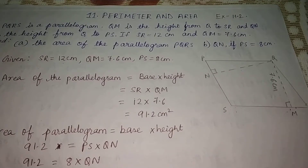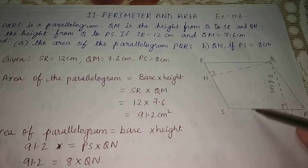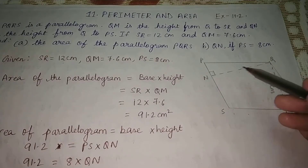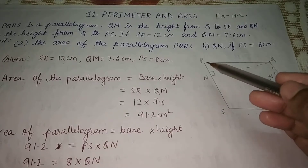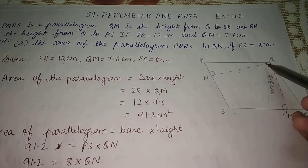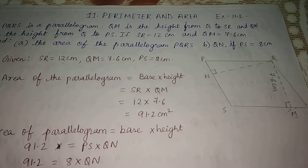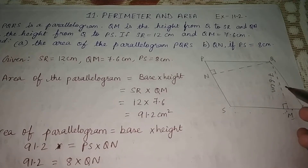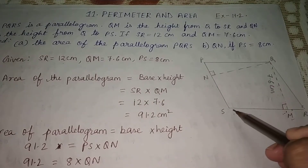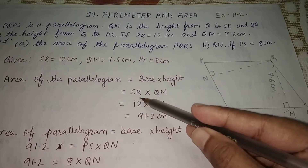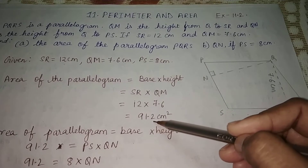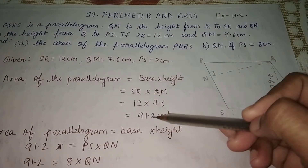Since QM is perpendicular to the opposite side, SR is the base and QM is the height. QN is not given, so we cannot use QN and PS for the area calculation. Area of parallelogram equals base times height, that is SR times QM. Putting in the values: 12 times 7.6 gives 91.2 cm².